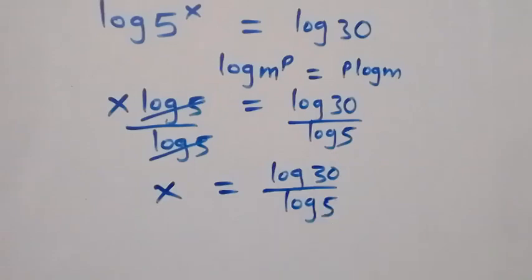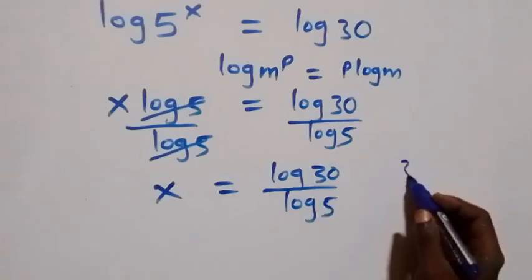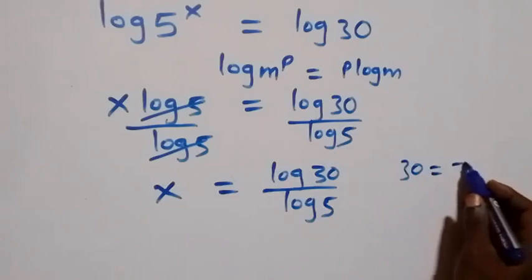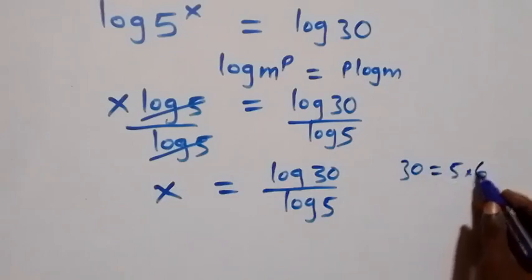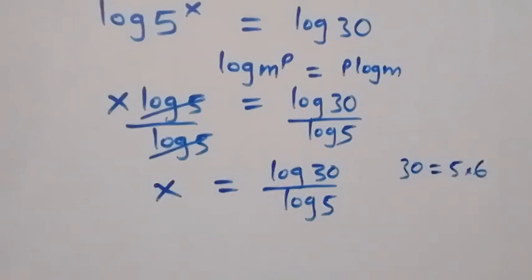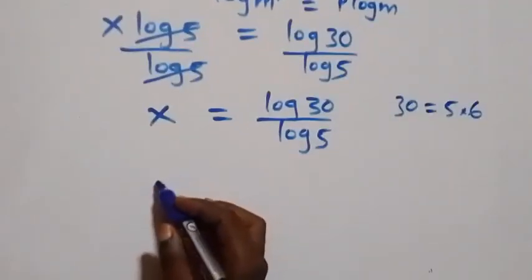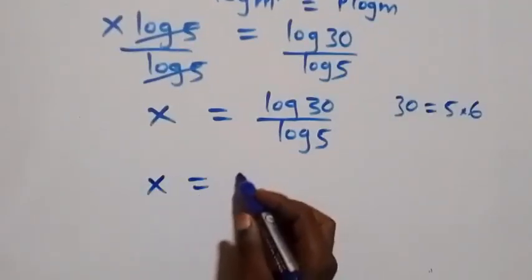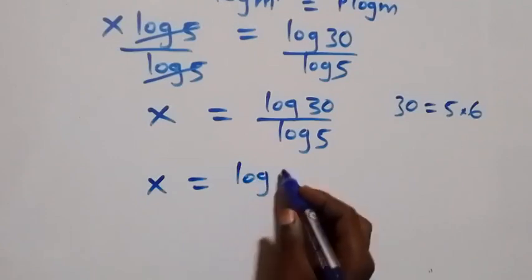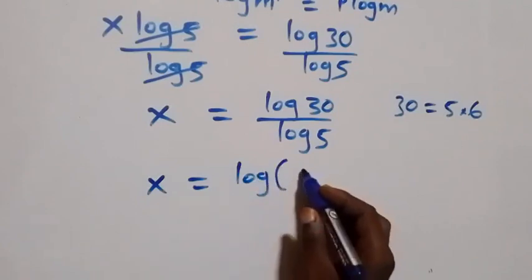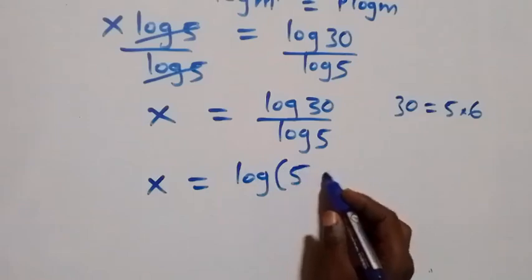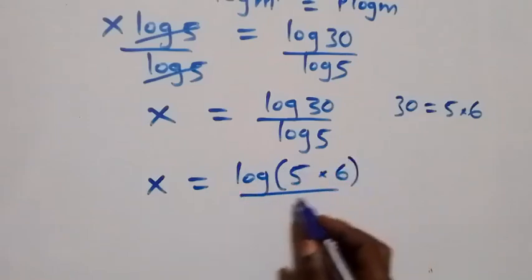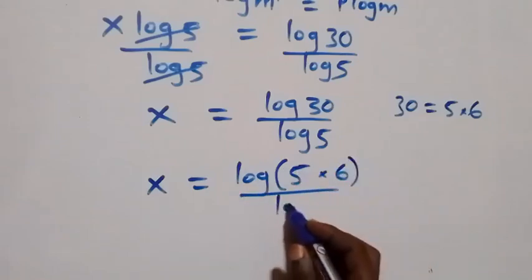The next step: from here we can write 30 as 5 times 6. Then what we have becomes x equals to log of the bracket 5 times 6, over log 5.